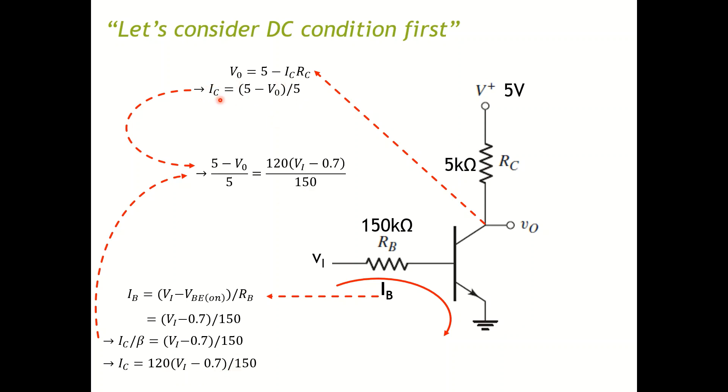So now I have the first equation for IC here. I have the second equation for IC over here. What I can do is combine them together. Now you can see I have output voltage on one side and input voltage on the other side. So effectively I can derive a relationship between the output voltage and the input voltage in DC conditions.